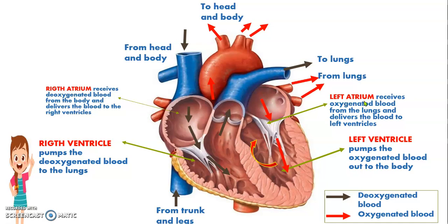The four chambers are the right atrium, left atrium, right ventricle, and left ventricle. The right atrium receives blood from the lungs and delivers it to the left ventricle. The right ventricle pumps the oxygenated blood to the lungs, and the left ventricle pumps the oxygenated blood out to the body.